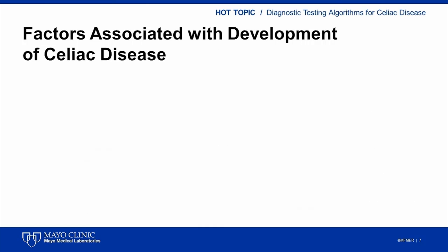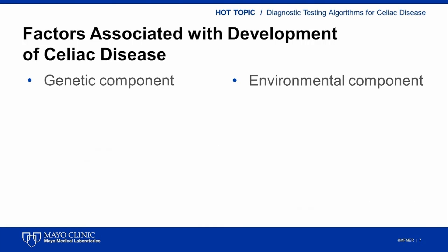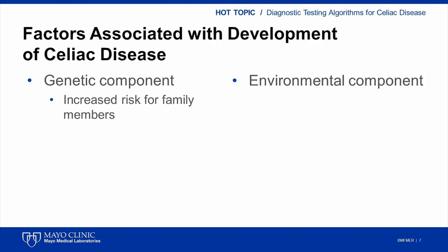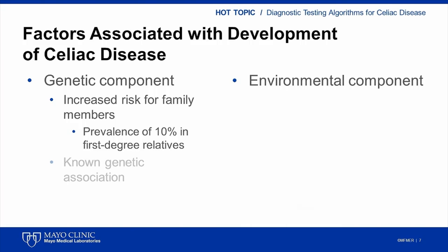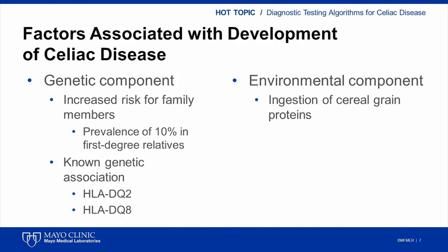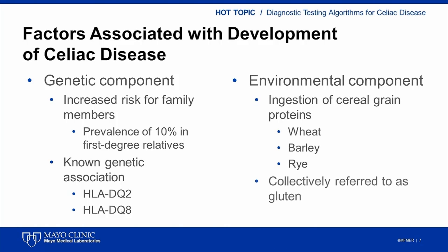For celiac disease to develop, an individual must have both the genetic susceptibility and the proper environmental exposure. The genetic component has been inferred from observations that the disease occurs in families. In the United States, celiac disease occurs in approximately 1% of the total population, but increases to 10% in first-degree relatives. Specific alleles of the human leukocyte antigen complex, namely HLA-DQ2 and HLA-DQ8, are responsible for much of the genetic susceptibility. The environmental component is dietary exposure to protein from cereal grains — wheat, barley, and rye — collectively known as gluten.